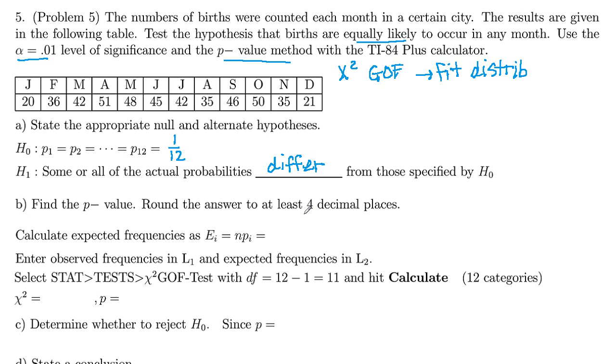We're using the calculator for this. We have to first calculate our expected frequencies, which are going to be n, the total number of births, times p sub i. If you add up all of these values here, you get 470. So that's our n. And then p sub i is 1/12, the proportion that we're testing against each month.